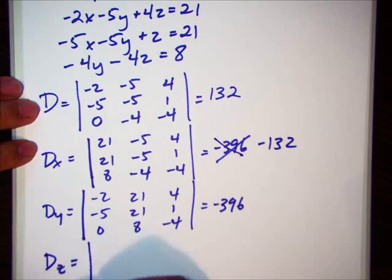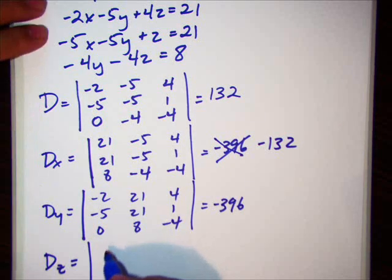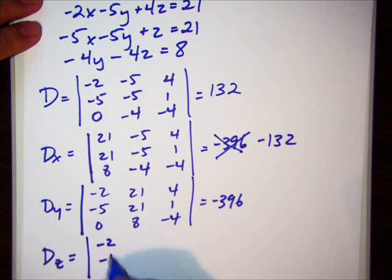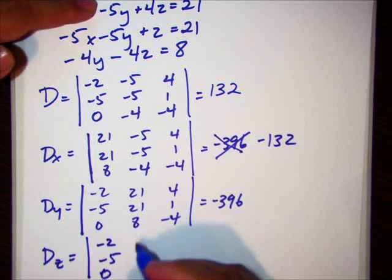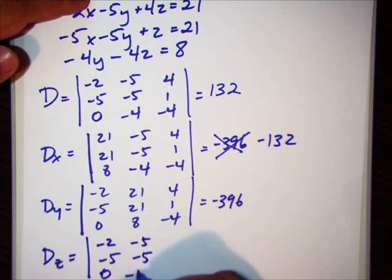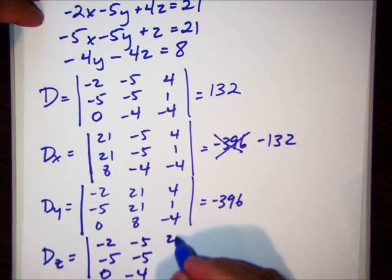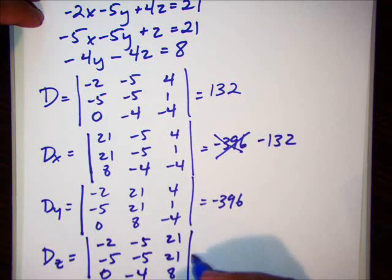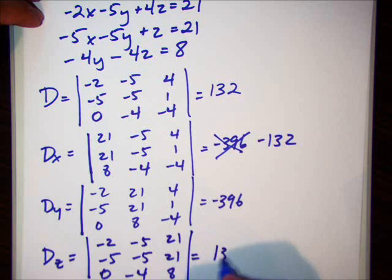Dz. Put the x column in. Negative 2. Negative 5. Zero. Put the y column in. Negative 5. Negative 5. Negative 4. The u to z column out. Put the constant column in. And that turns out to be positive 132.